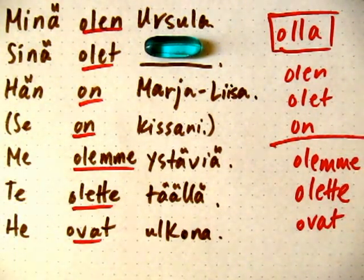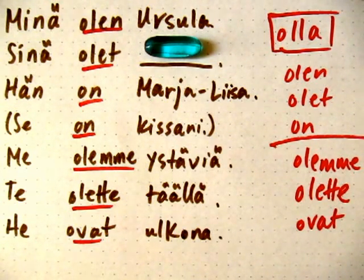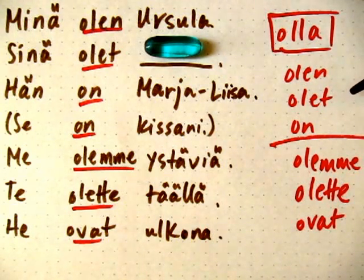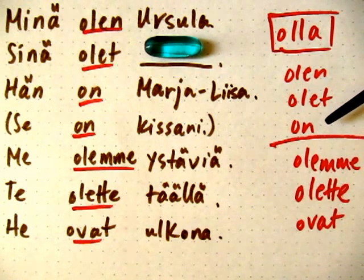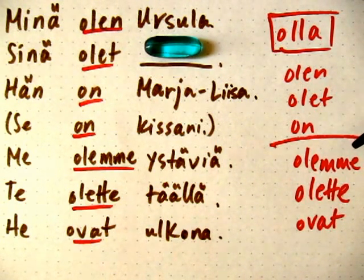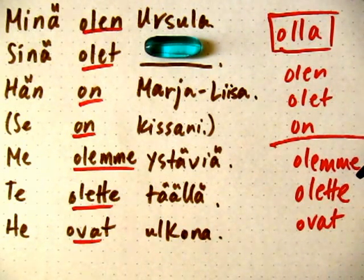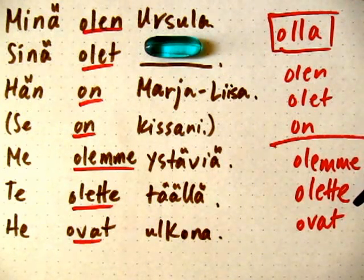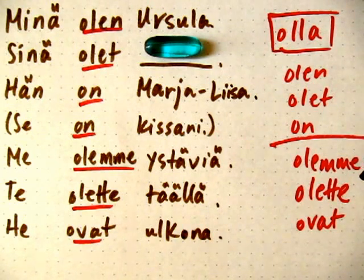To review the verbs by themselves, the different forms we've got: olen — I am; olet — you are, singular; on — he, she, or it is; olemme — we are; olette — you are, either formal you or you plural; ovat — they are.